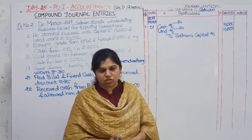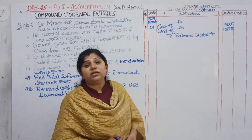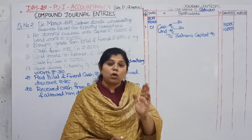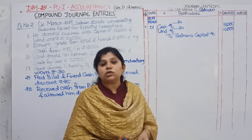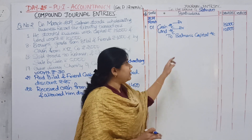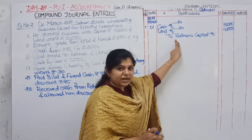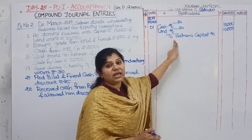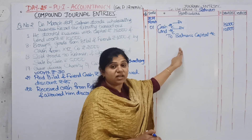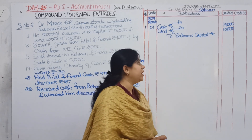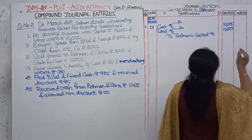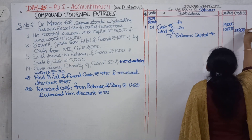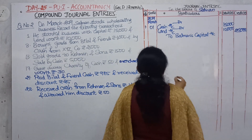Capital account is a liability because the amount invested by the owner must be given back to Salman when the business is wound up or closed. Therefore it is a liability — so capital account is credited. The amount is rupees 25,000.